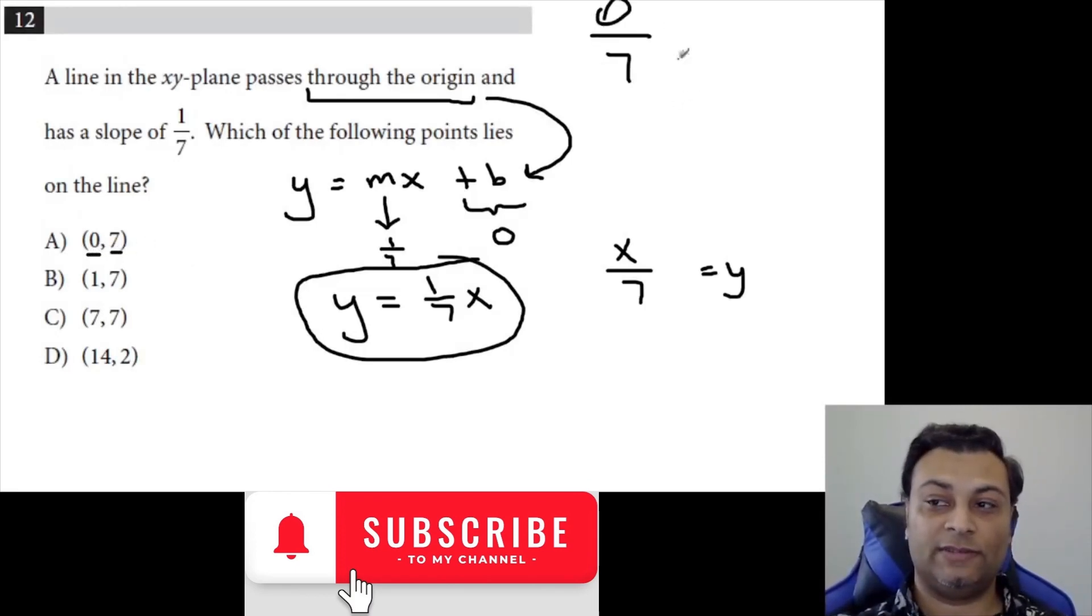0 divided by 7 produces 0, not this. 1 divided by 7 is 1/7, not regular 7. 7 divided by 7 is 1.